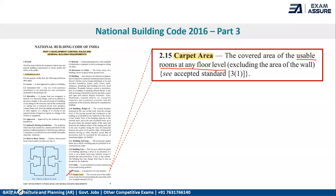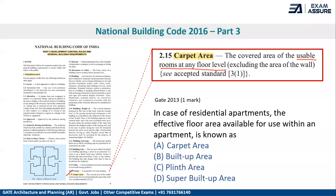As per the National Building Code, carpet area is defined as the covered area of the usable rooms at any floor level. From previous year GATE, there is a question from GATE 2013 for one mark asking that in case of residential apartments, the effective floor area available for use within an apartment is known as — the answer is carpet area.